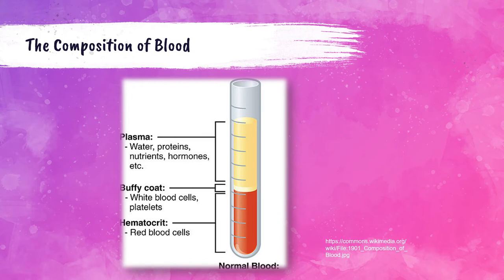The middle portion, between the plasma and the red blood cells, is a white layer called the buffy coat. This contains the sample's white blood cells and platelets. There are no cells in the plasma in a centrifuged sample — the red cells are on the bottom and the white cells and platelets are in the middle buffy coat. If a patient has a very elevated white blood cell count, that buffy coat is going to be much thicker.